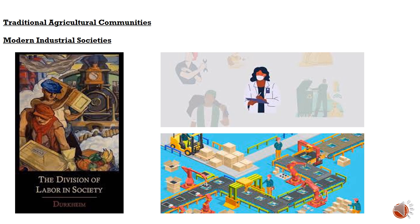In modern industrial societies like urban centers in India, there is a high degree of specialization and diversity in occupational roles. Individuals pursue distinct professions such as doctors, engineers, teachers, entrepreneurs, and artists, each contributing to the complex web of social and economic life. This specialization gives rise to organic solidarity, where individuals rely on each other's specialized skills and expertise. For example, a doctor depends on engineers to maintain medical equipment, while teachers rely on farmers to produce food, underscoring the interconnectedness of diverse occupational roles.